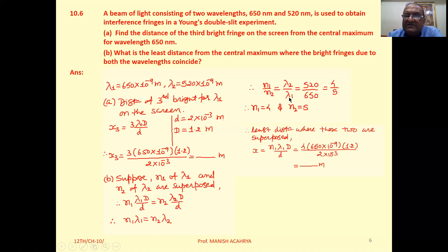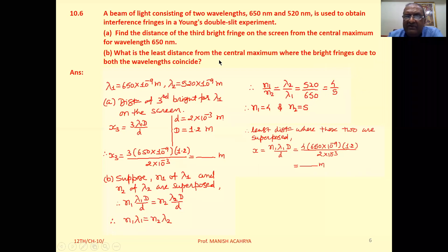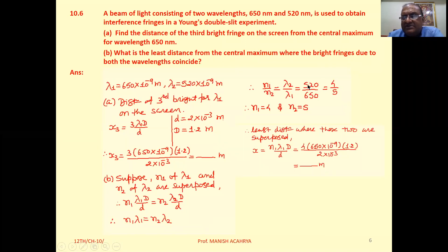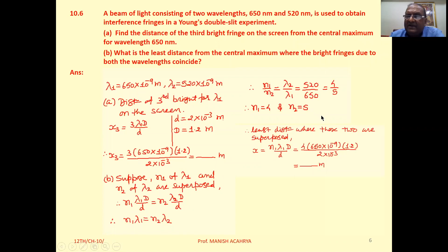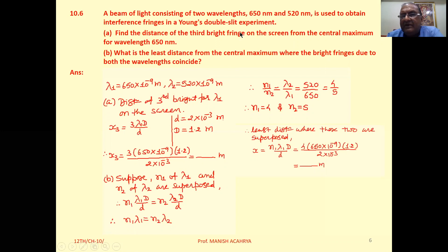So n₁ upon n₂ equals lambda 2 by lambda 1, which is 520 by 650. The minimum ratio is 4 by 5 because we want the least distance. So we consider the least ratio, meaning for lambda 1 fourth bright and for lambda 2 fifth bright superpose to each other on the screen.